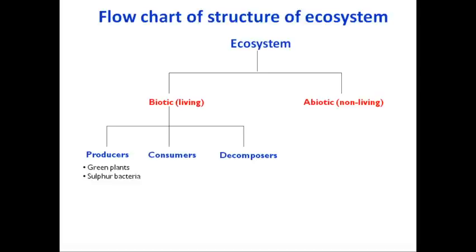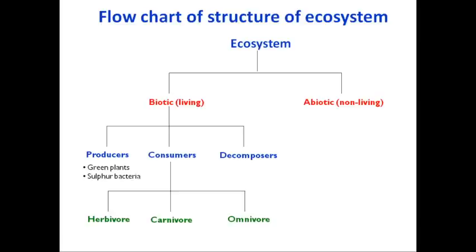The second category is consumers. These organisms cannot synthesize their food on their own, so they are dependent on producers to meet their food demands. Consumers can be further subdivided into three subcategories: herbivores, carnivores, and omnivores. Herbivores — as the name indicates, 'herb' means green plant — are animals which feed on green plants or producers. Examples of herbivores include rabbits, cow, sheep, and goat.